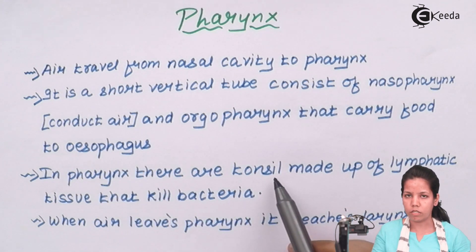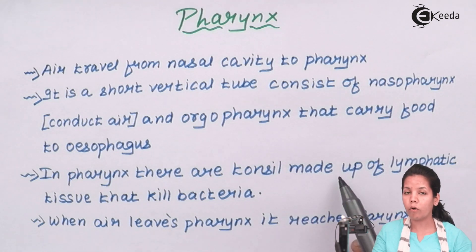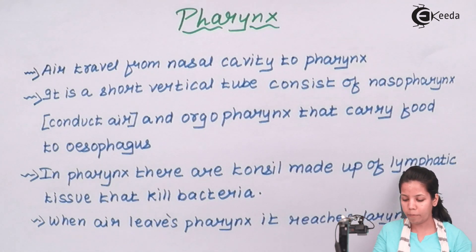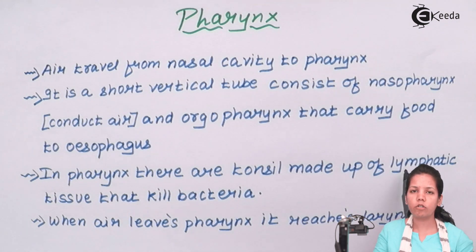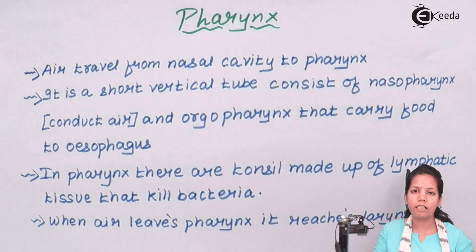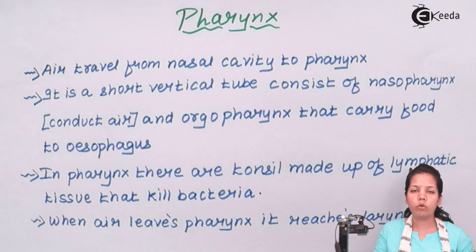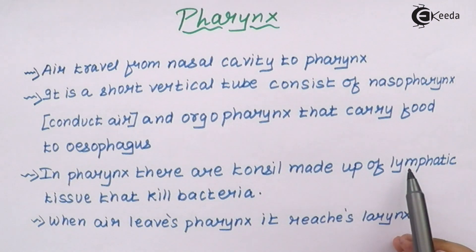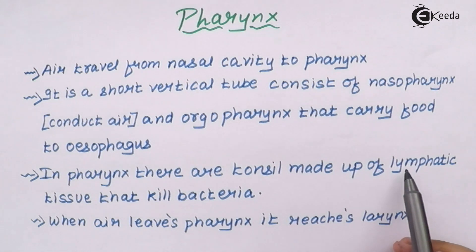In pharynx, the tonsillar regions secrete mucus and also contain lymphatic tissues. These lymphatic tissues contain macrophages and dendritic cells — all termed as phagocytic cells, which are cells that engulf or eat harmful bacteria. Whenever you respire and there is a harmful bacterium in the atmosphere, macrophages, dendritic cells, or lymphatic tissues will actually kill those bacteria.